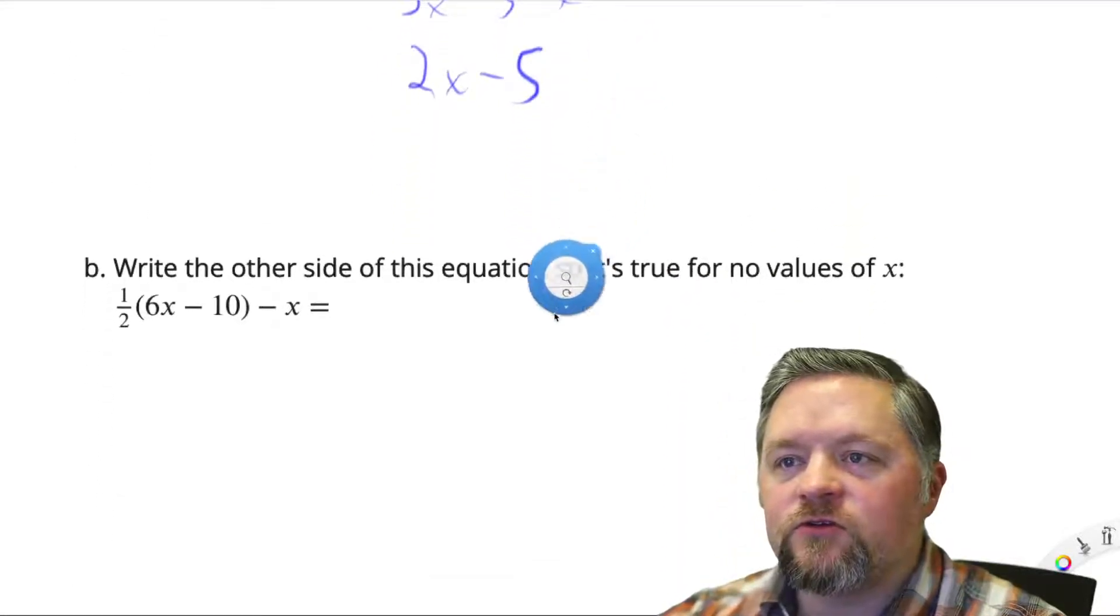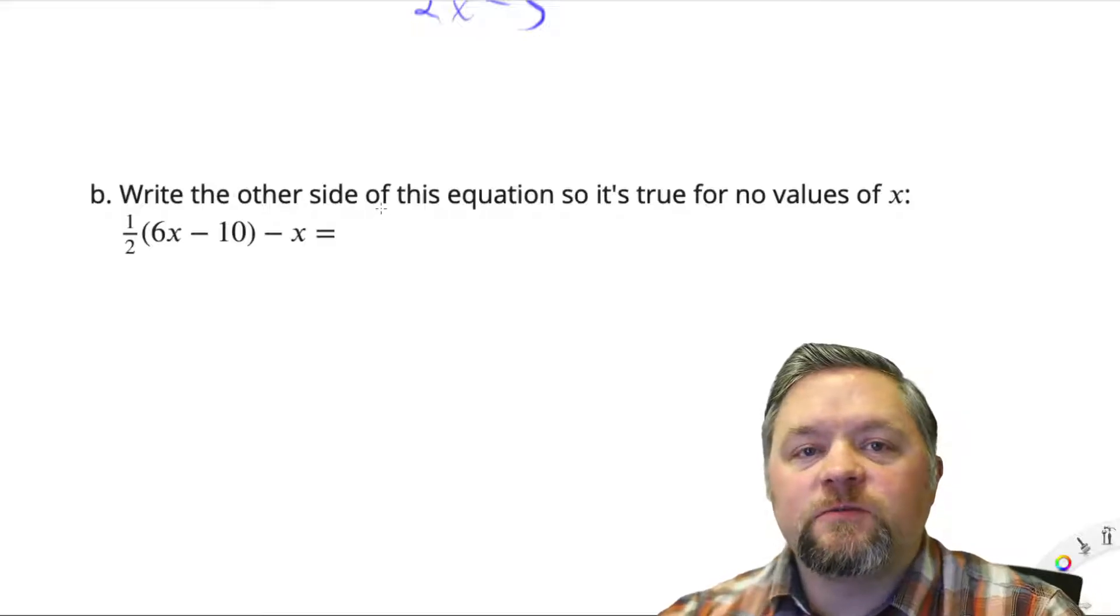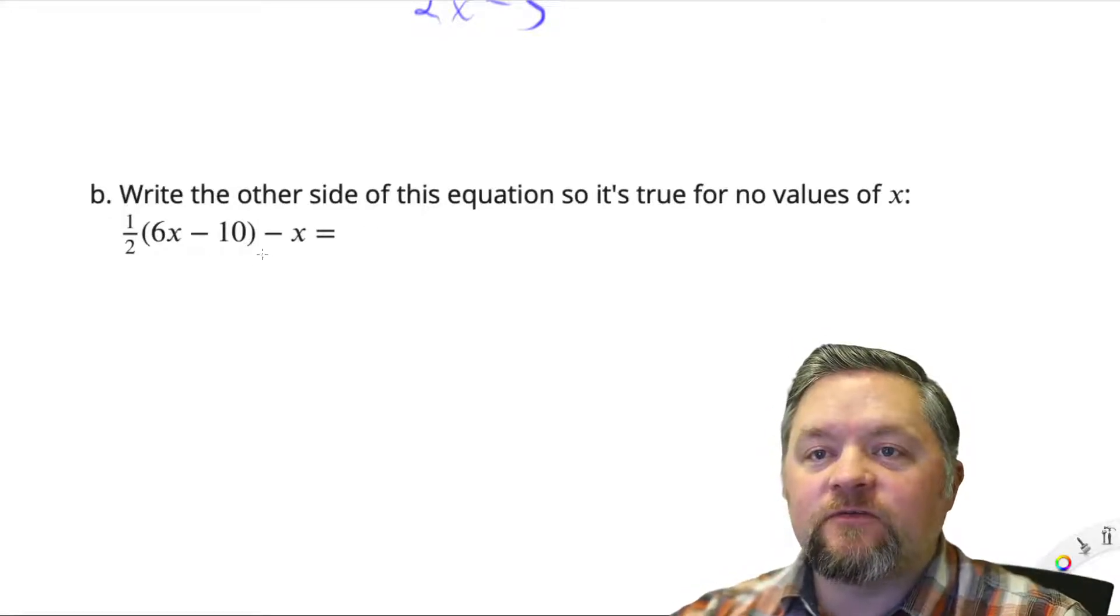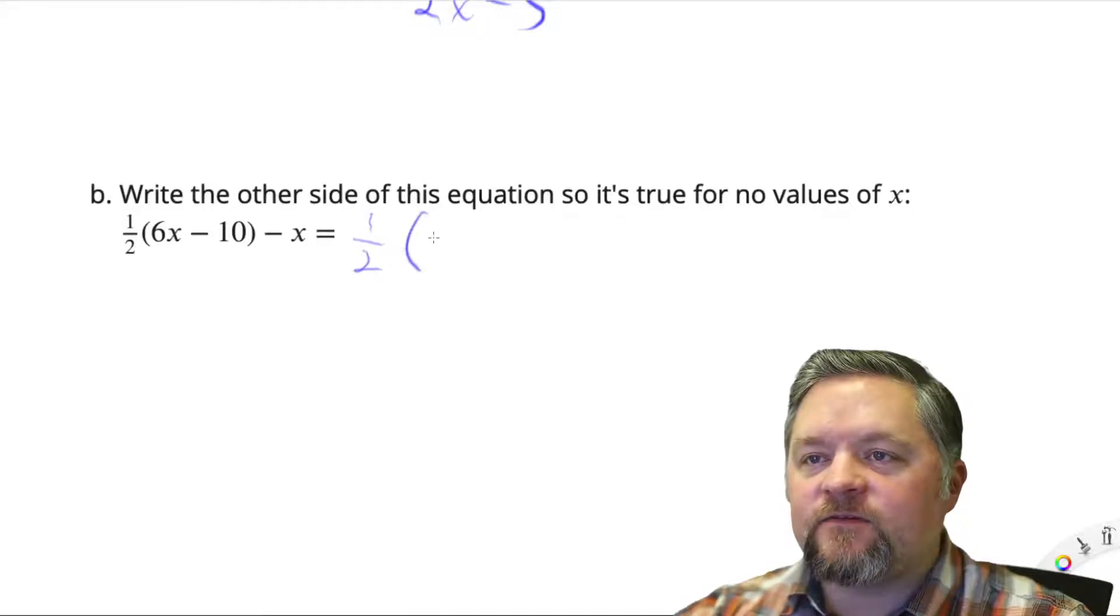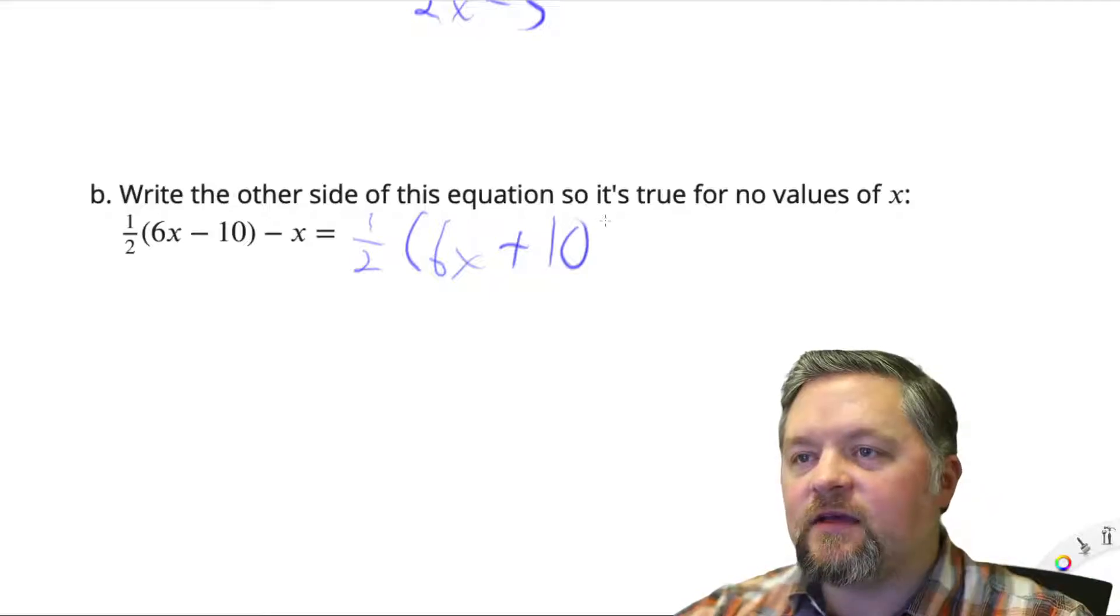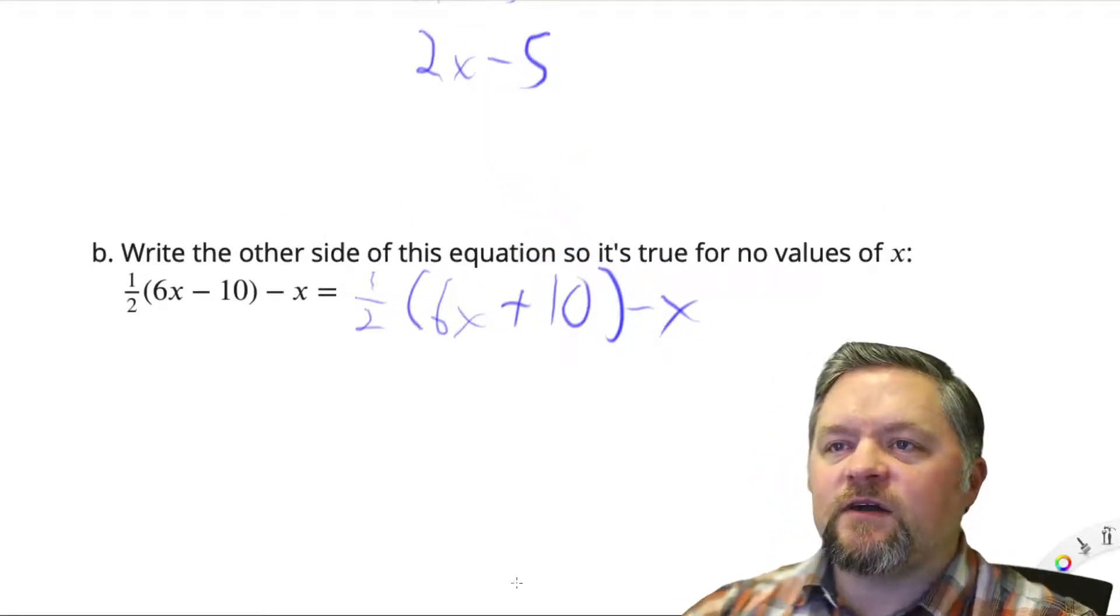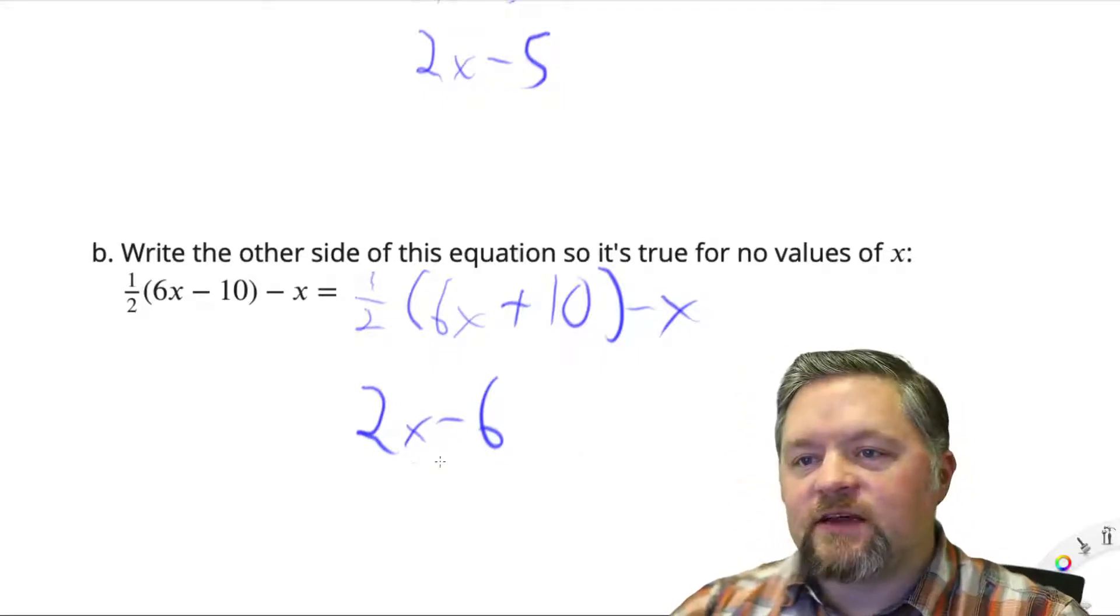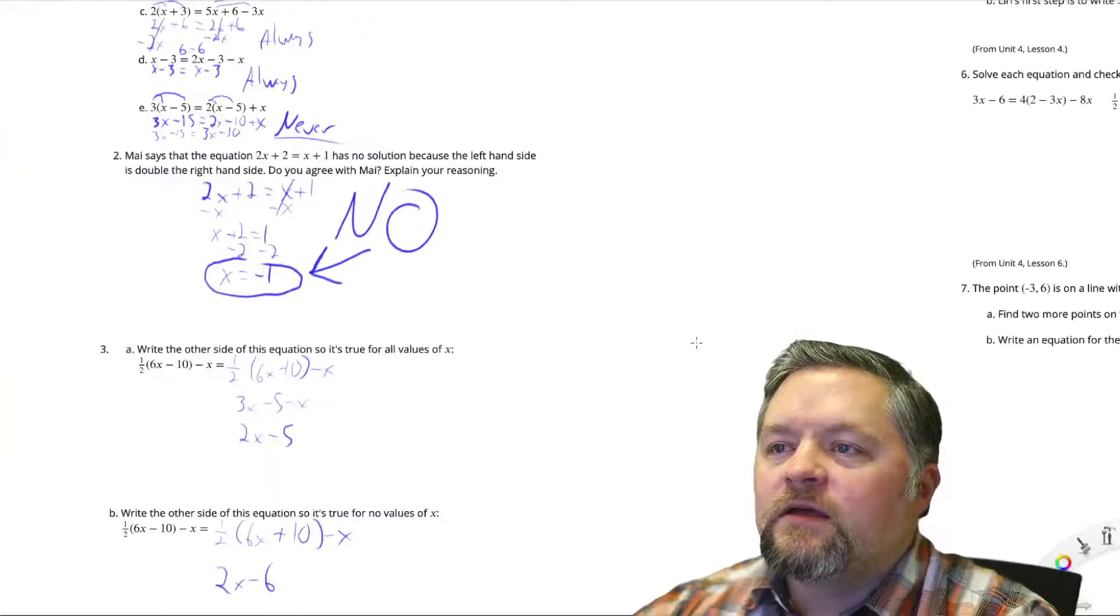Write the other side of the equation so it's true for no values of x. To be true for no values of x, it needs to have the same number of x's, the same quantity of variables on each side, but it needs a different number of constants. So we could just have 1 half times 6x plus 10 minus x. That simplified to 2x minus 5 before. We could just have 2x minus 6. It needs to have the same number of x's, different number of constants, or just numbers.